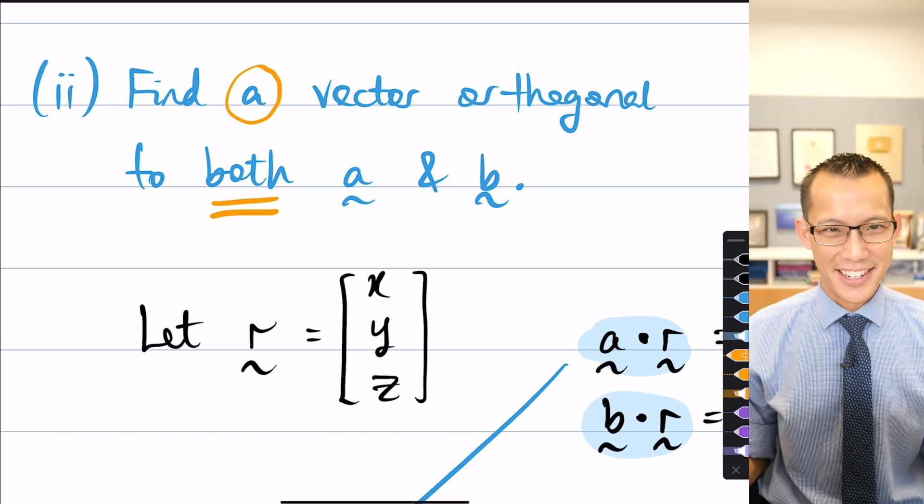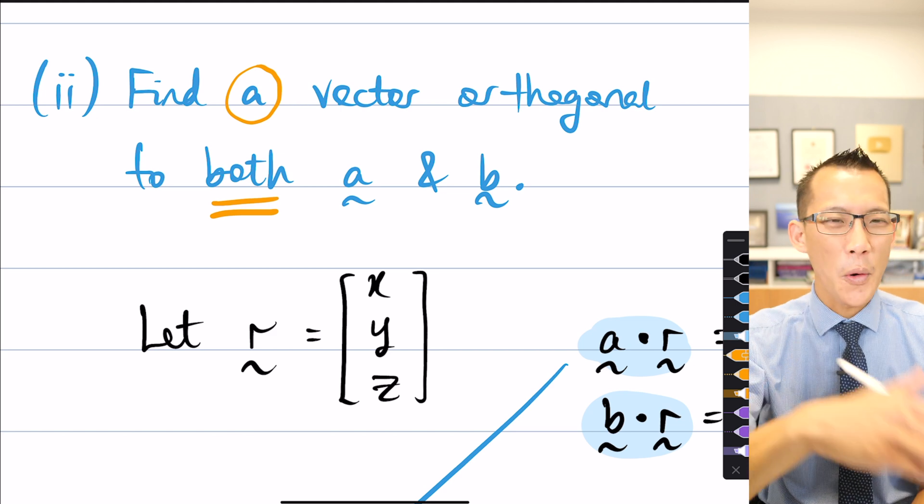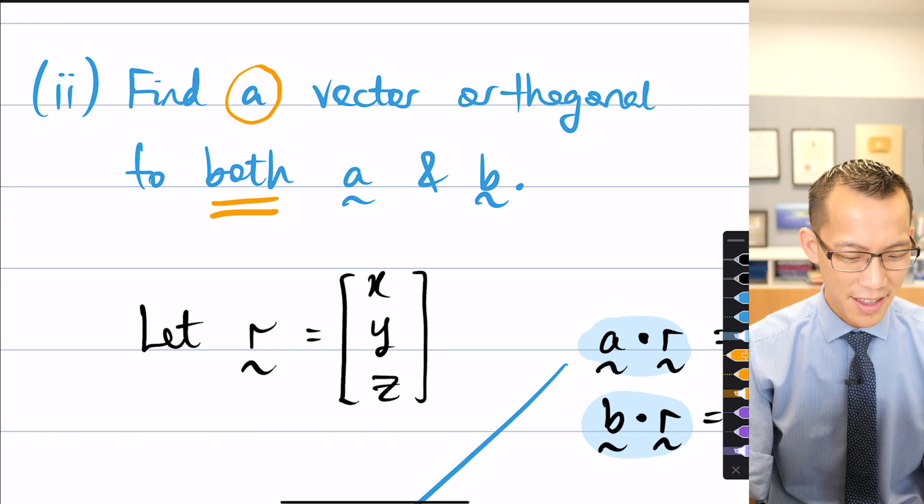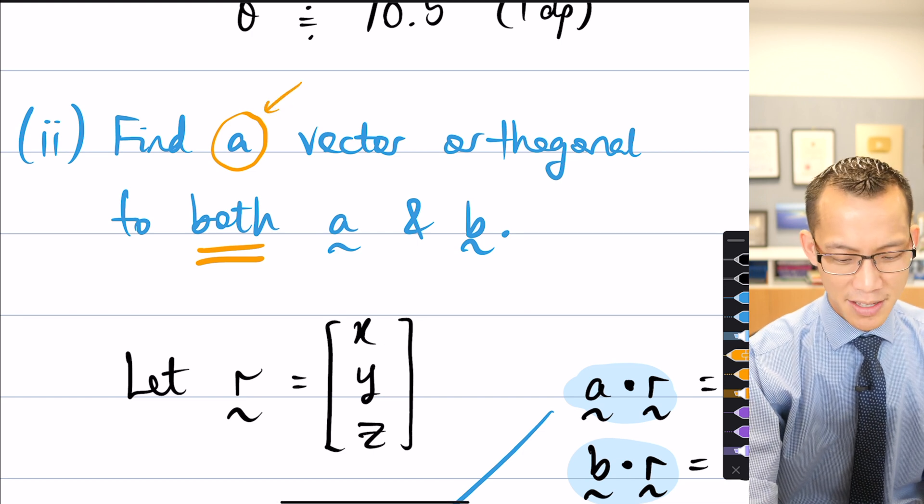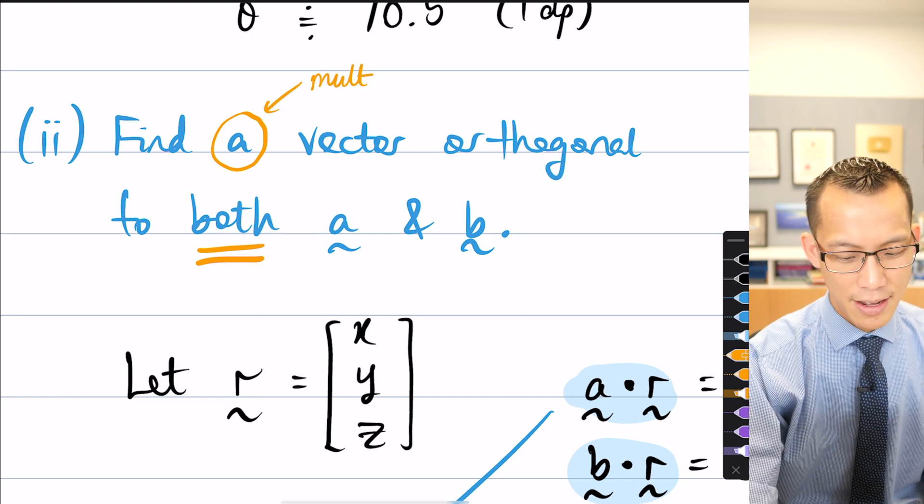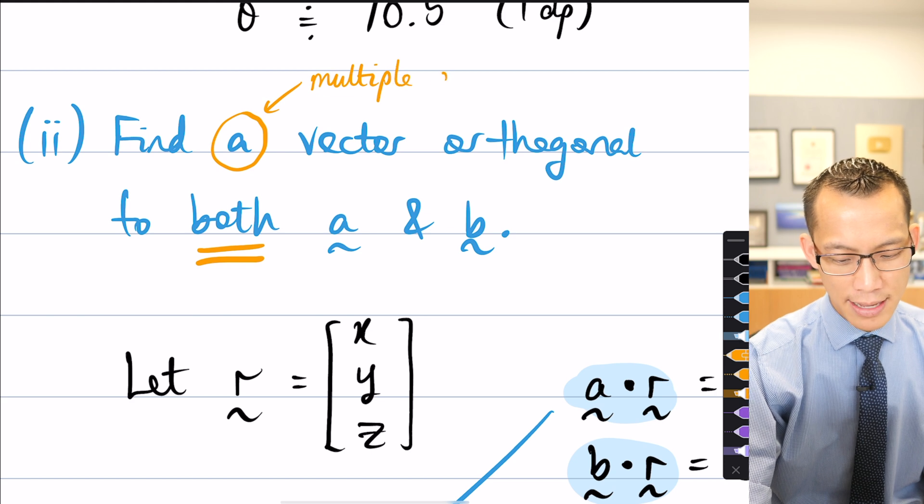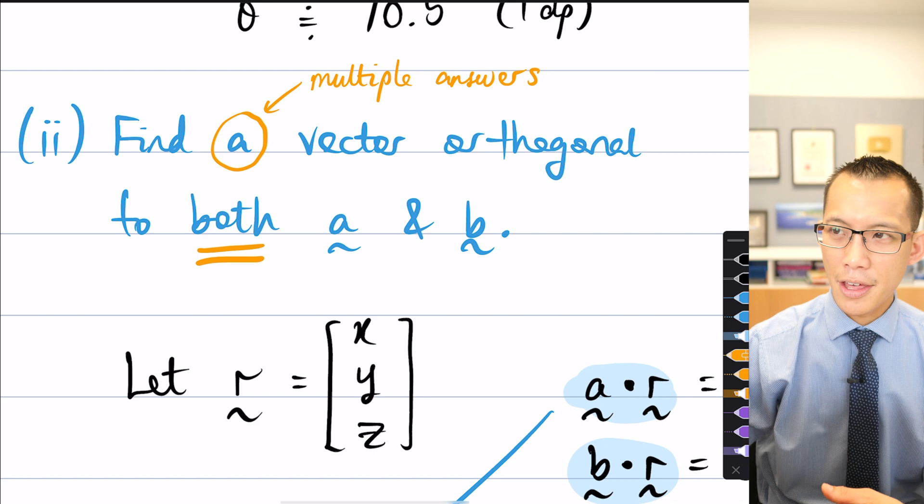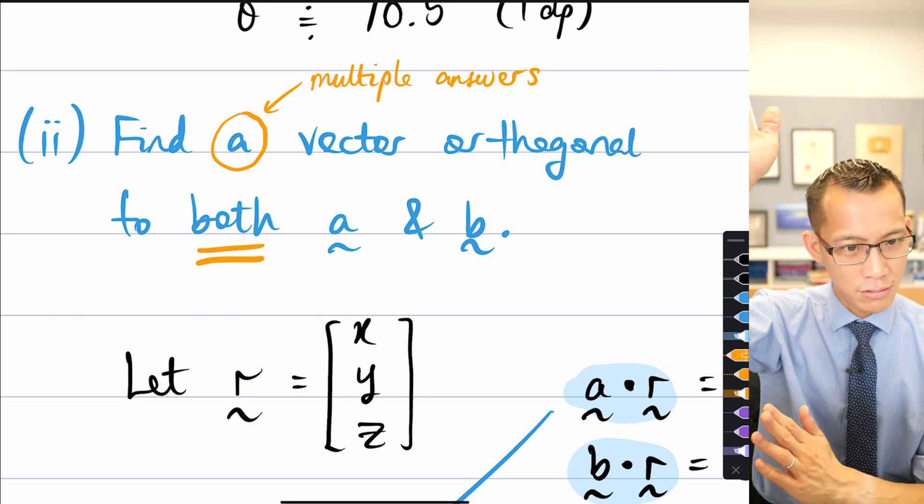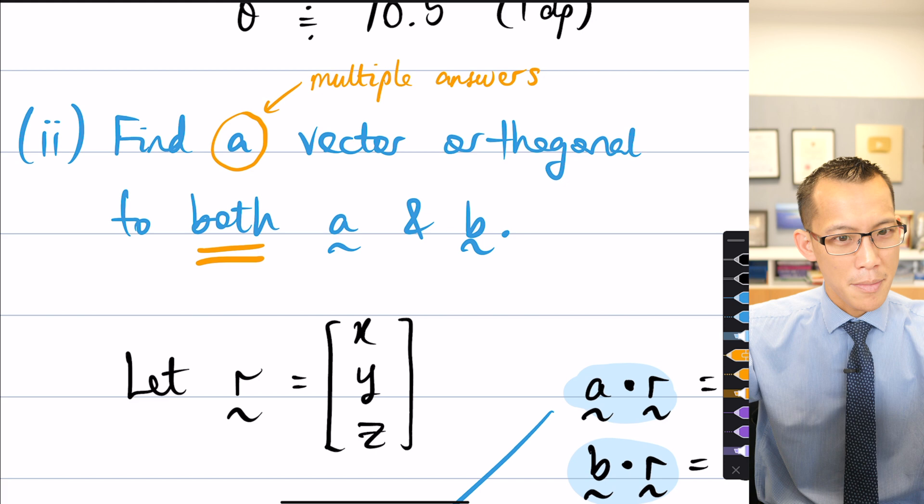Find A vector. Now, what's going on here? I know it's such a throwaway word. You don't pay close attention to it, right? When you say find A vector, what that means is, well, there's multiple answers, right? And that should make sense to you because that example I gave to you before about the positive Z axis is orthogonal to the X and Y axes. Remember that?